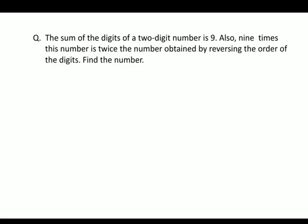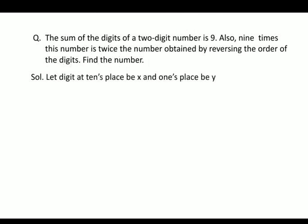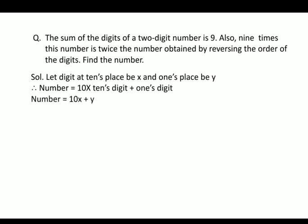The next problem: the sum of the digits of a 2-digit number is 9. Also, 9 times this number is twice the number obtained by reversing the order of the digits. Find the number. It is a 2-digit number, so let the digit at the 10's place be x and the digit at the 1's place be y. Therefore the number equals 10 into the 10's digit plus the 1's digit, that is 10x plus y.